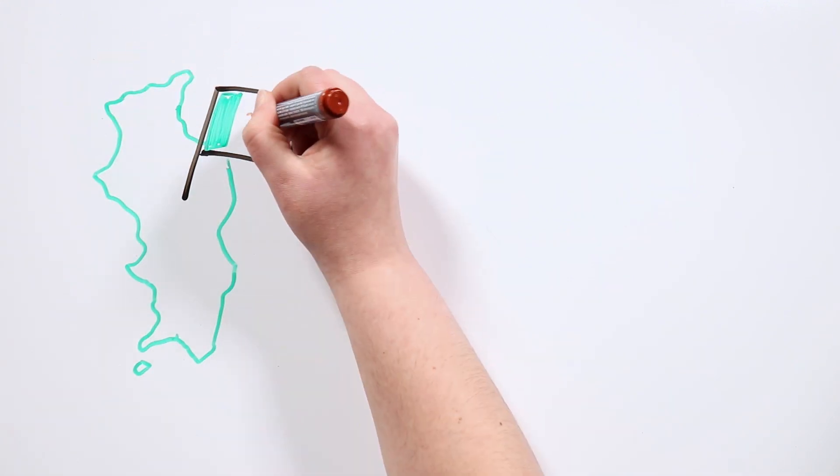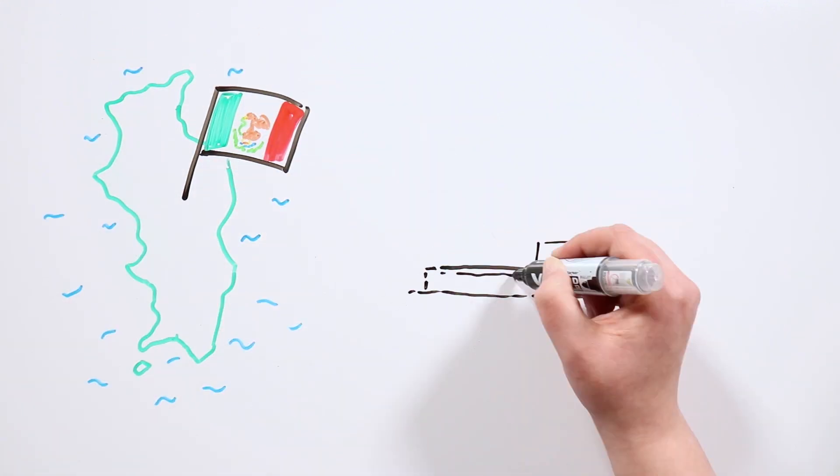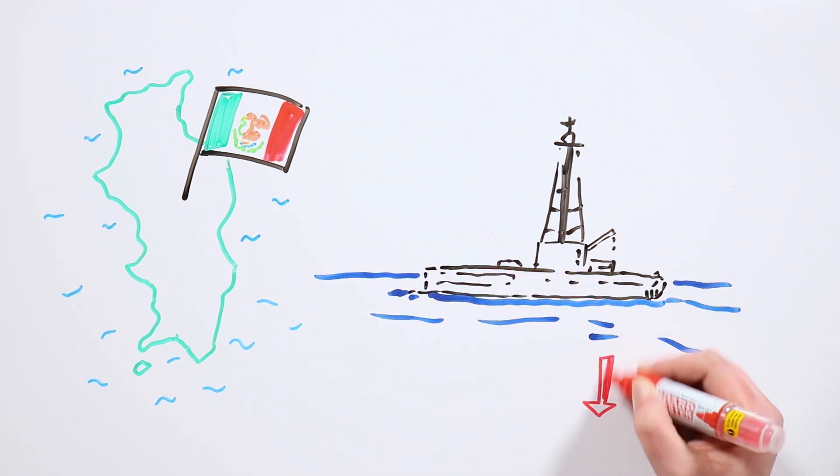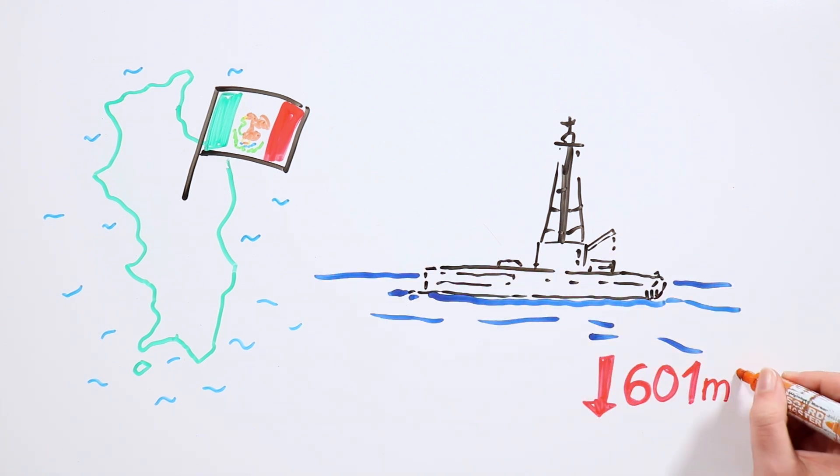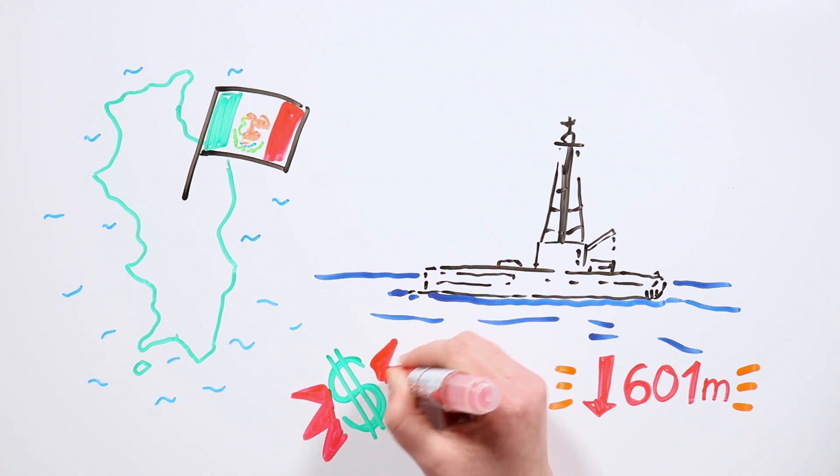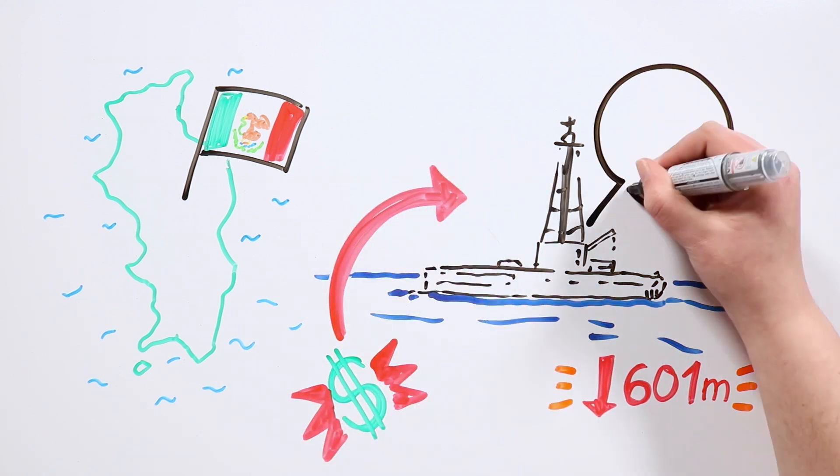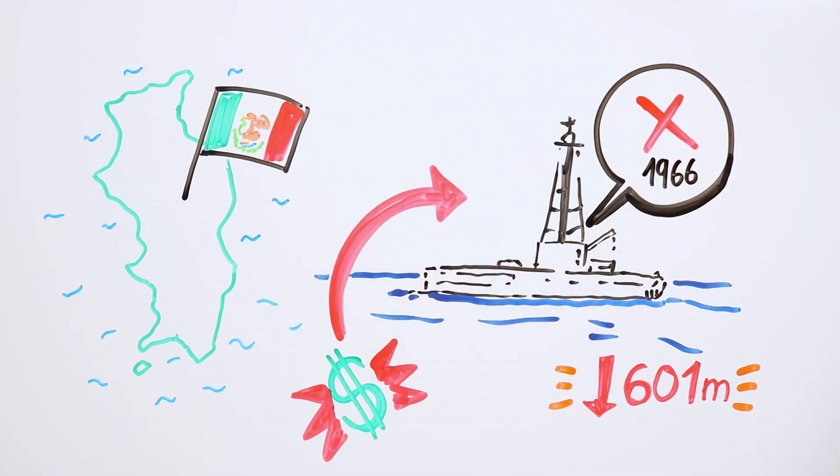The drilling took place off the coast of Guadalupe Island, Mexico, from an offshore drilling rig, and they managed to reach a depth of 601 meters below the seabed. However, the high cost of the project, which was funded privately, led to its abandonment.